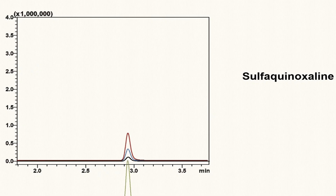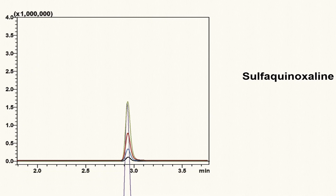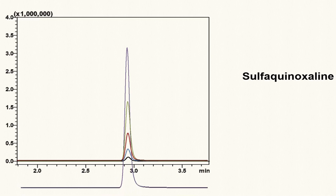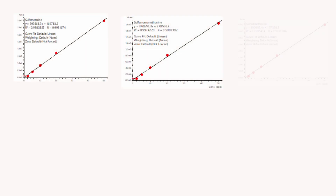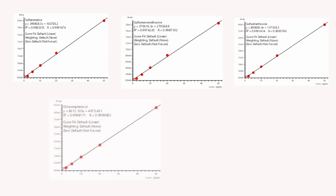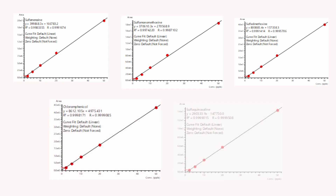Let's look at the overlay of the chromatograms of calibration standards for sulfaquinoxaline. The calibration curves for the five compounds with good linearity were generated by LabSolutions Insight software, with an R-squared value above 0.997 achieved.